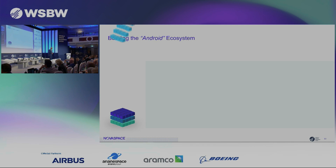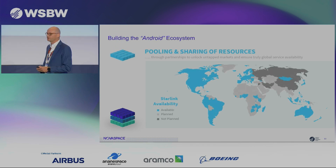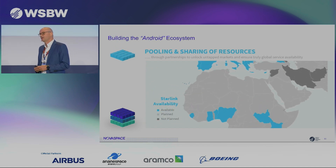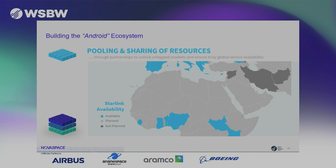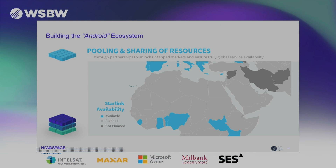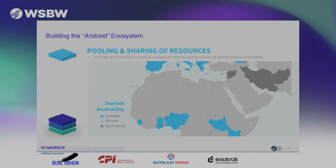Number four, the fourth and final layer, is the pooling and sharing of resources. It's critically important to build partnerships to get real, true global service availability. For many operators, it has been very difficult to gain market access — including Starlink, as depicted here on the map. Despite many efforts, there's still a lack of market access in many Middle East countries, as well as parts of Africa and Asia.